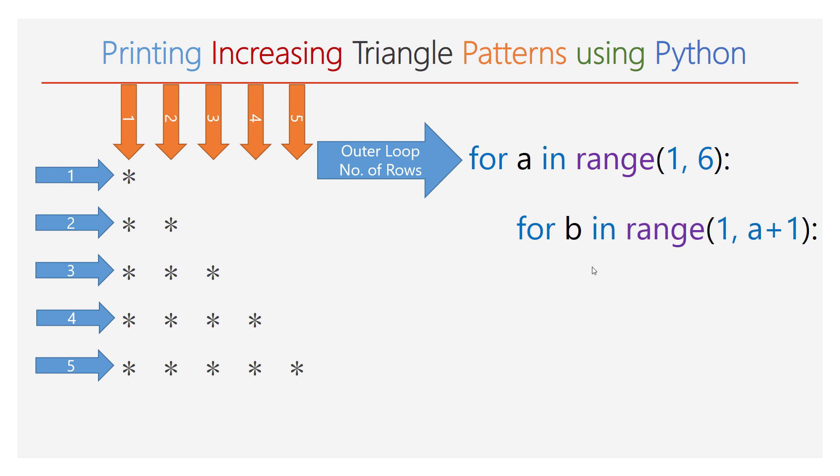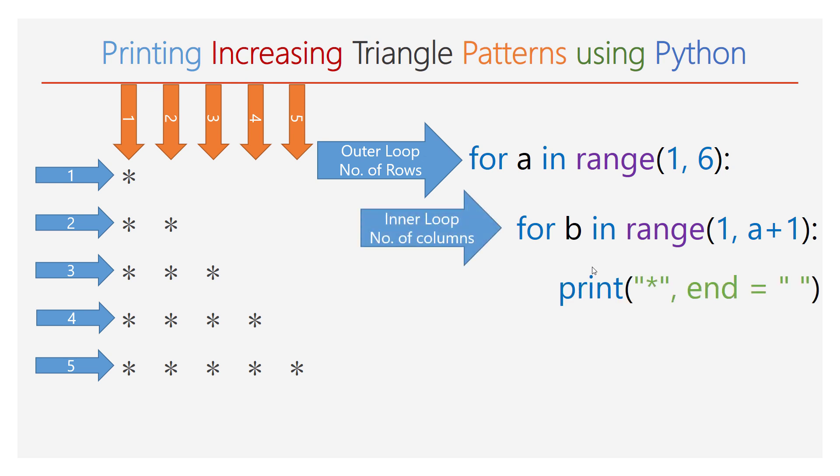The inner for loop has a range of 1 to a+1, making it a function of the outer for loop. Based upon the values of the outer for loop, the inner for loop will be iterated. The print function with the end attribute is used as an argument, along with one empty print function, so as to start printing the stars in a new line after completing the inner for loop every time.